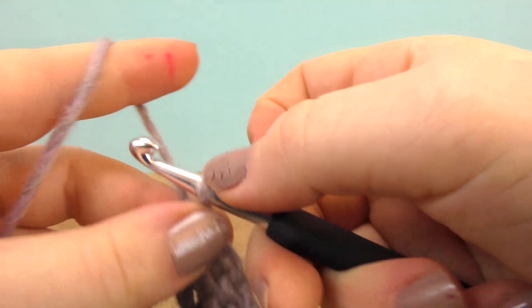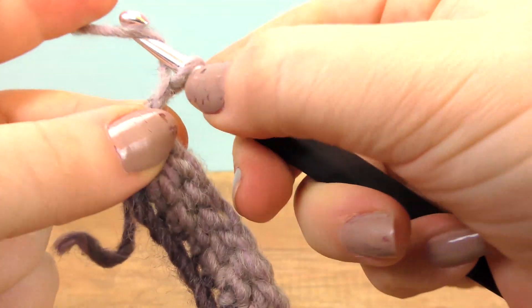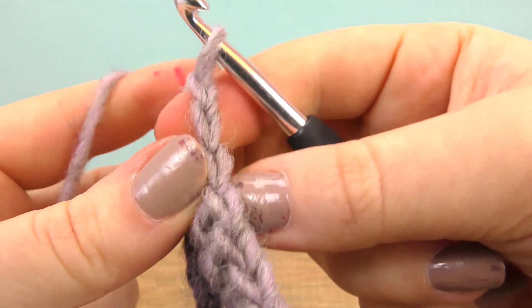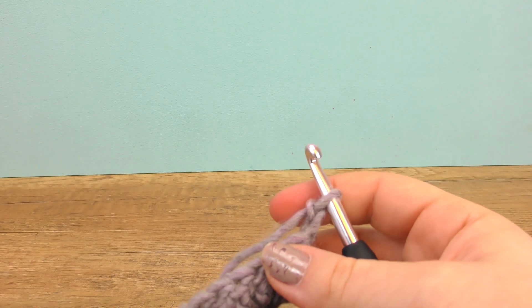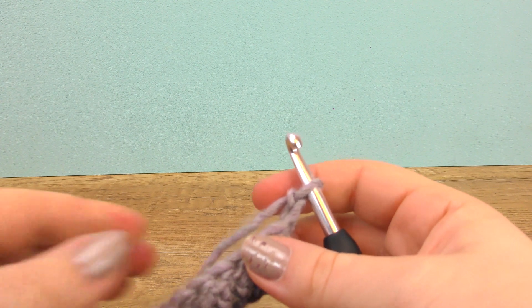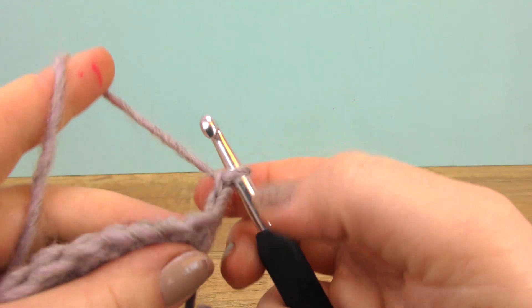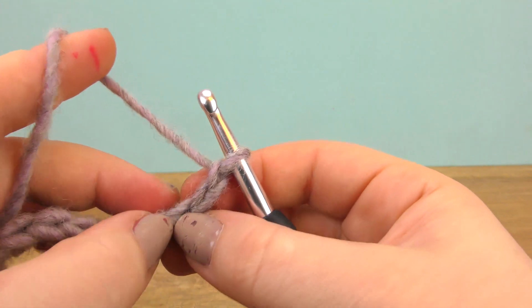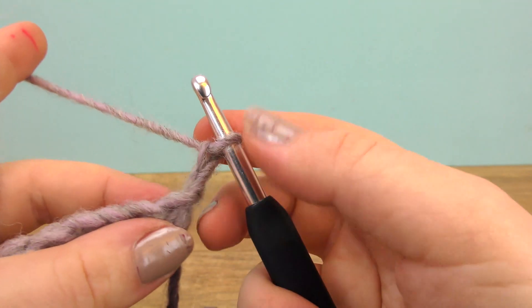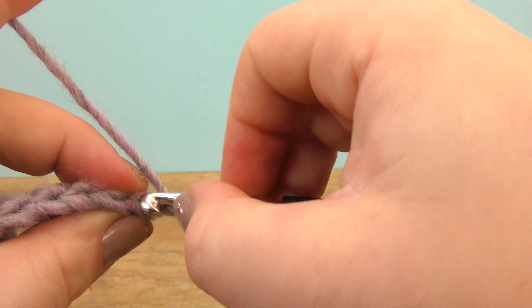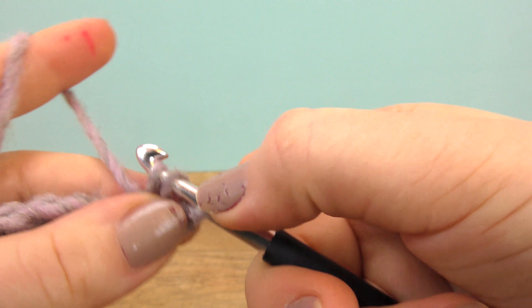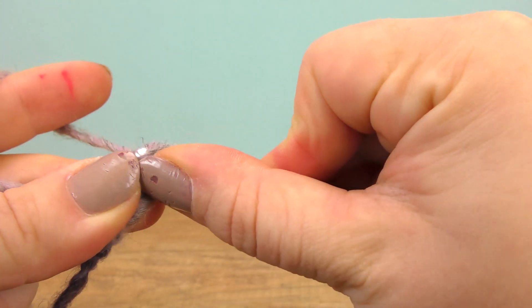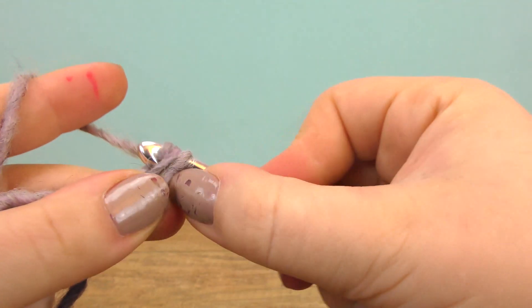Now let's continue with two chains for the height and then turn. We again do 25 trebles. This time we just go into the back section of each stitch and I'll show you how to do that. There we go.